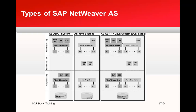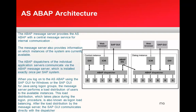In the AS ABAP system, there are three layers visible in the figure: the central instance, the central services instance, and the dialog instances. In the ABAP architecture, the message server provides the AS ABAP with a central message service for internal communication. It also provides information on which instances of the system are currently available.